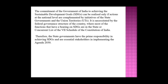The commitment of the Government of India to achieve the Sustainable Development Goals can be realized only if action at the national level is complemented by initiatives of state governments and union territories. This is necessitated by India's federal governance structure, where most functions bearing on SDGs are in the State or Concurrent List of the Seventh Schedule of the Constitution of India. Therefore, state governments have prime responsibility in achieving SDGs and are essentially stakeholders in implementing Agenda 2030.